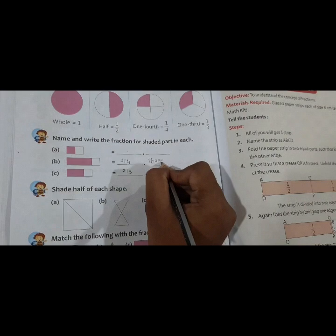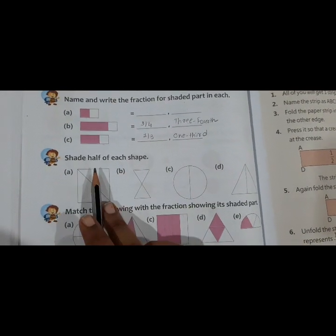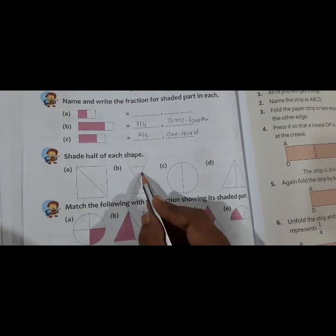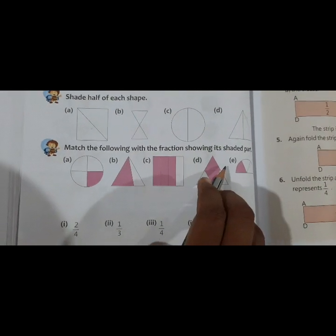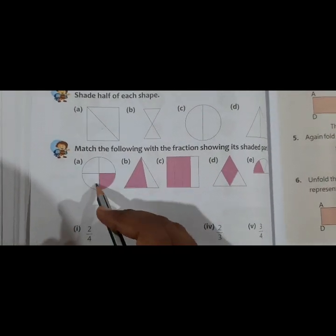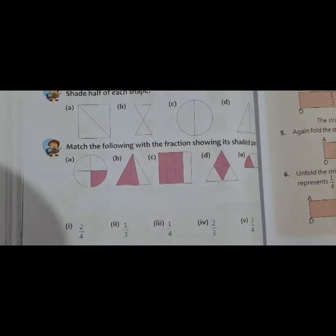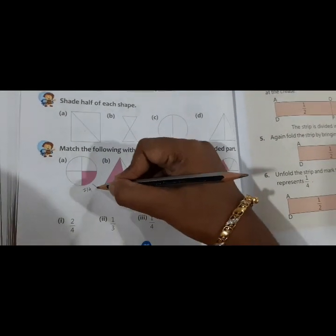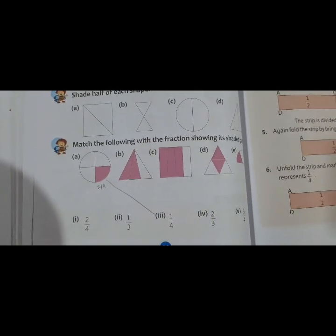Three fourths. Next question. Shade half of each shape. Already we have a half portion over here. One of the part you have to shade it. Next thing. Match the following with the fraction showing its shaded part. Now, how many compartments over here? Four. Among these four, which part, how many parts are going to shade? Only one. So this is your what? One fourth. So you have to join with like this. Remaining B, C, D, and E, you have to do by yourself.